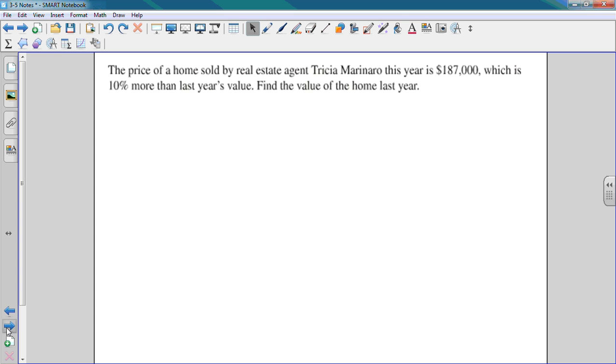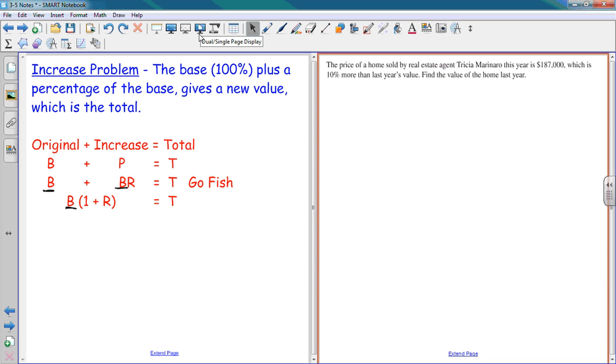The price of a home sold by real estate agent Tricia Marinero this year was $187,000, which is 10% more than last year's value. Find the value of the home last year. I have 10%, I know that's my R. I'm going to use my equation B times 1 plus R equals T. Is $187,000 my total or my B?